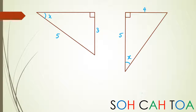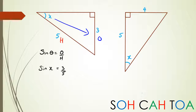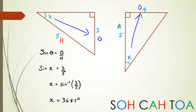In the left-hand triangle, 5 is the hypotenuse and 3 is opposite, so I have O and H - I'm using sine. Sine of the angle = opposite over hypotenuse, so sin x = 3/5, meaning x = inverse sine of 3/5, which equals 36.87 degrees. For the second question, I have a side opposite and a side adjacent, so I'm using tan: tan x = 4/5.